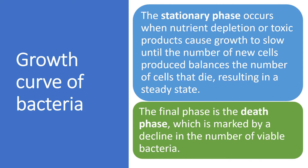The third phase is the stationary phase, during which nutrient depletion or toxic products cause growth to slow until the number of new cells produced balances the number of cells that die, resulting in a steady state. In this stage, the cells are neither dividing nor dying. The fourth or final stage is the death phase, in which there is a decline in the number of viable bacteria due to cell death.